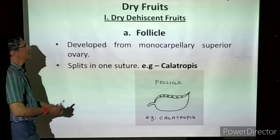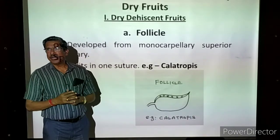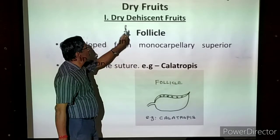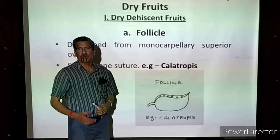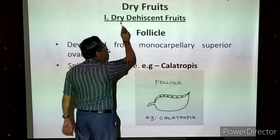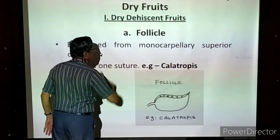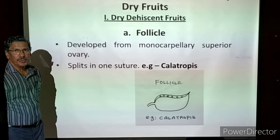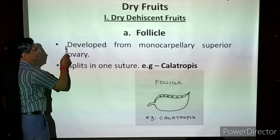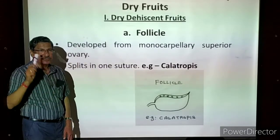Now we are coming to dry fruits. As mentioned in the outline classification, dry fruits have a thin pericarp that is dryable. In that, the first group is dry dehiscent fruits. We have studied three groups: dry dehiscent, dry indehiscent, and schizocarpic. The first type of dry dehiscent fruit is called follicle. The follicle fruits are developed from a monocarpellary superior ovary — compulsorily.